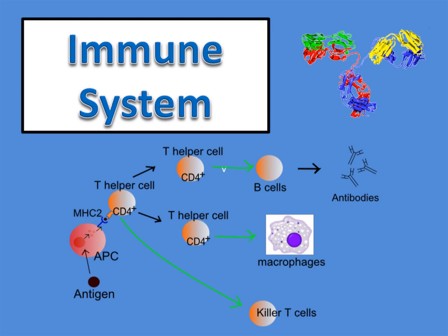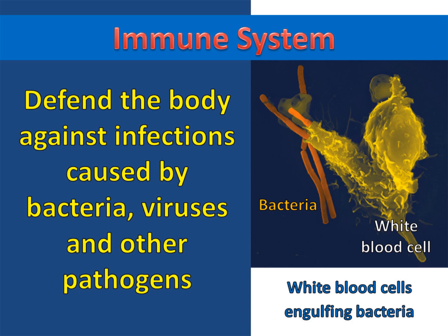The immune system. The primary purpose of the immune system is to defend the body against infections caused by bacteria, viruses, and other pathogens. A pathogen is anything that can infect the body and cause a disease.